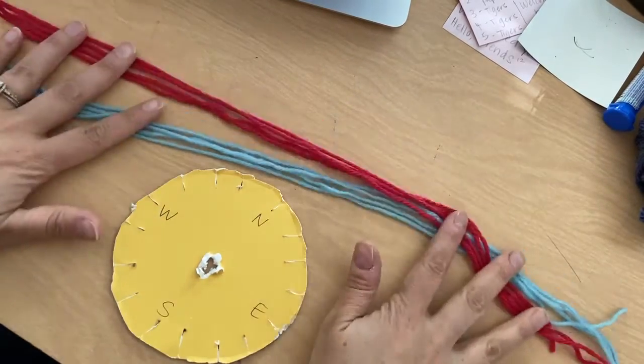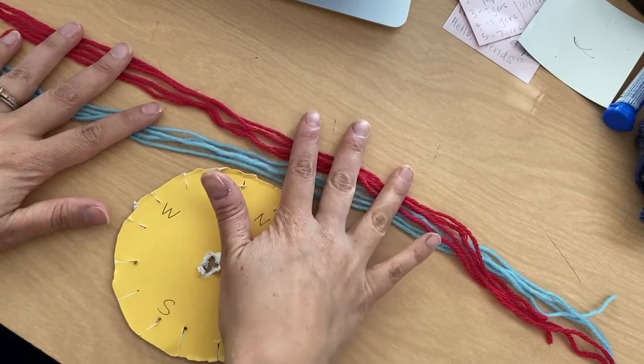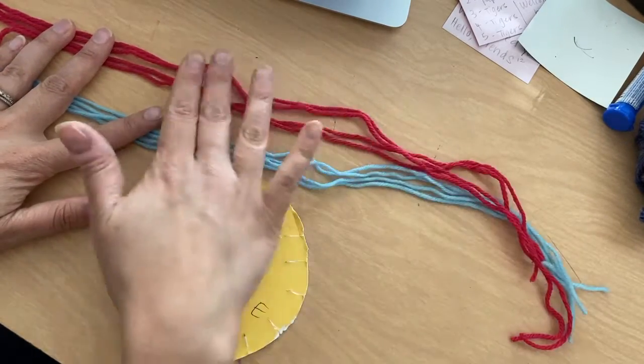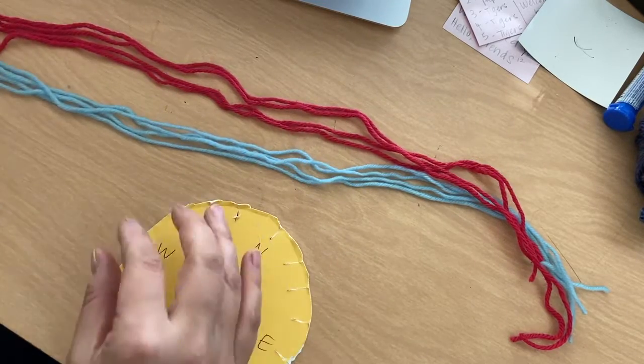You are going to pick two colors of yarn, so I picked blue and pink. You need four of each color, so four plus four equals eight.